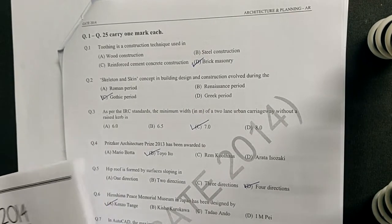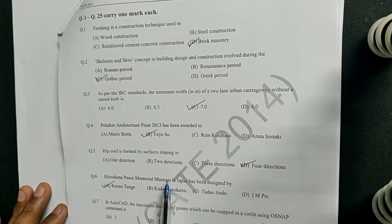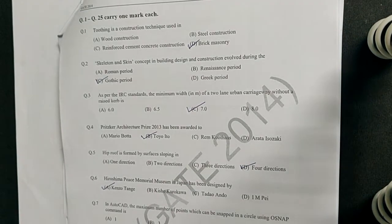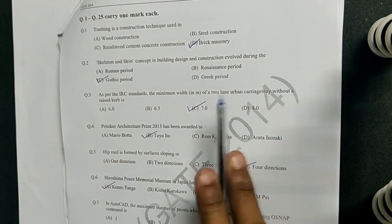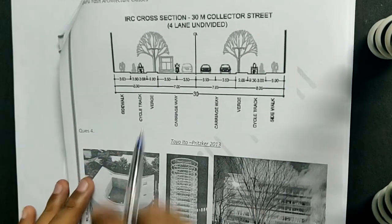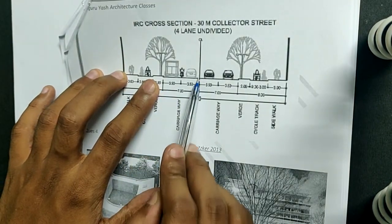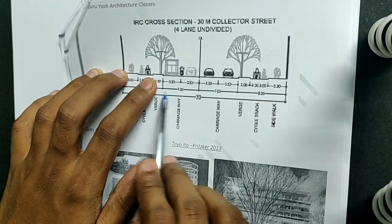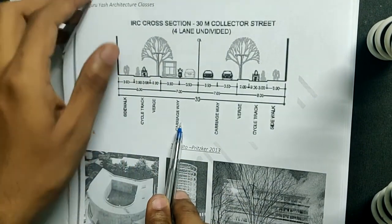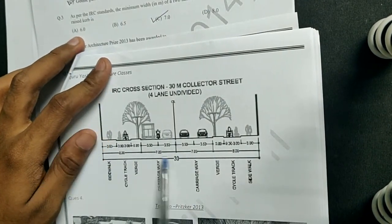The next question: as per IRC standards, the minimum width of a two-lane urban carriageway without a raised curb is — the answer is seven meters. Without a raised curb it is seven meters, and with a raised curb it is seven point five meters. I have an IRC cross-section here — you can see the two-lane without a raised curb is marked as seven meters.